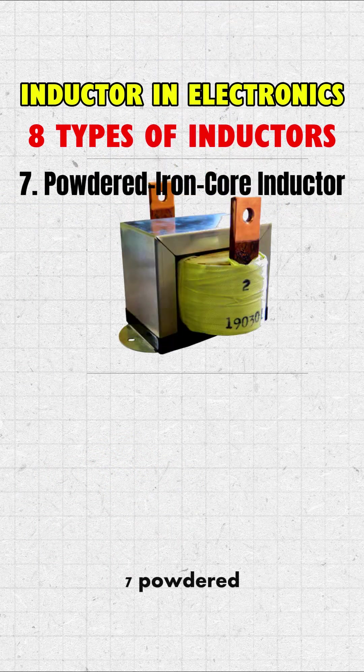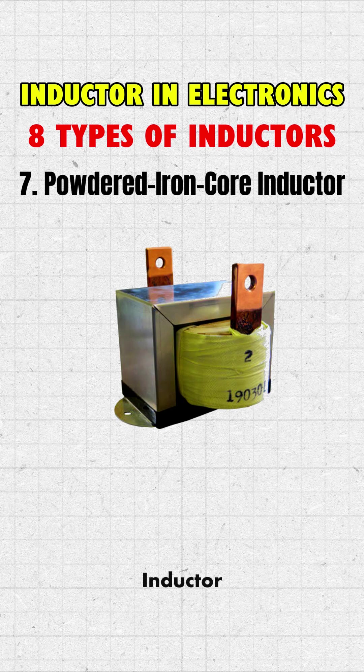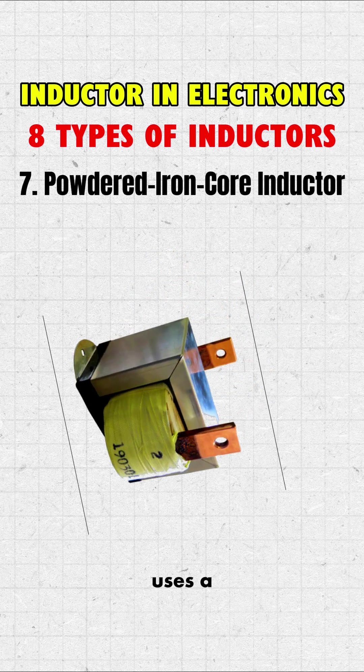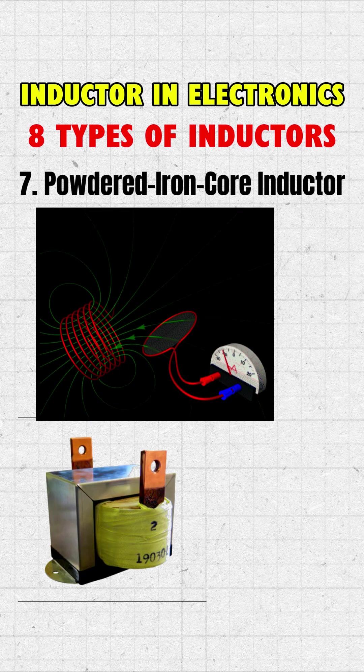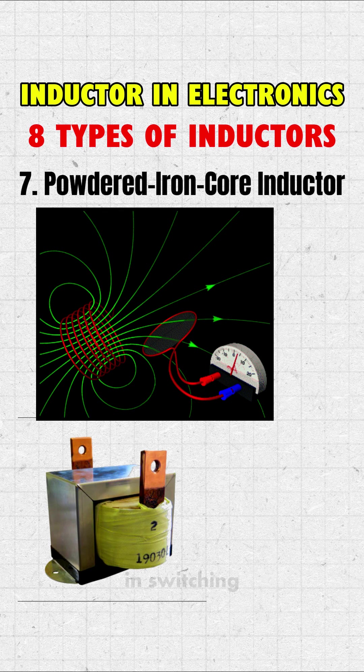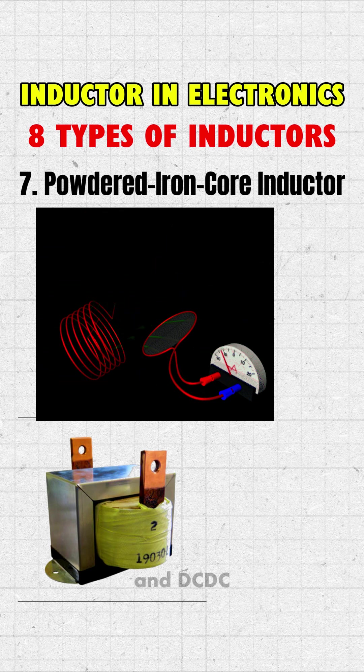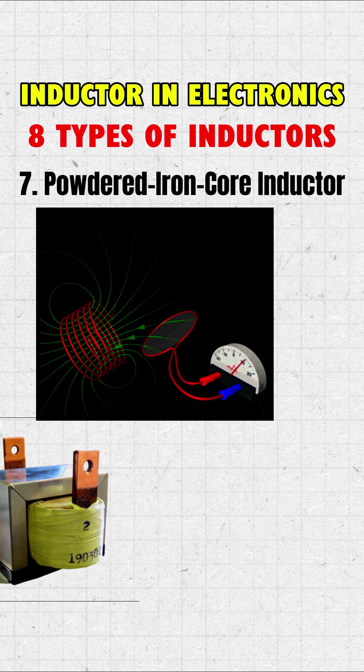7. Powdered iron core inductor. This inductor uses a core made of iron powder, which is compressed and mixed with a binding material. It offers better energy storage and is commonly used in switching power supplies and DC-DC converters.